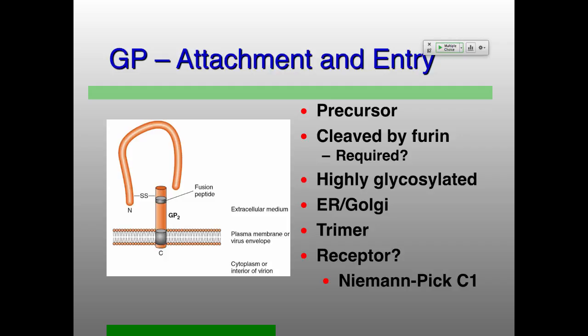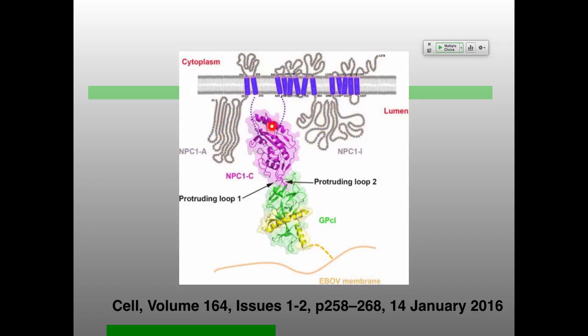We now know the structure of the Niemann-Pick C1 protein — this incredible transmembrane protein with 13 transmembrane helices. It's this part that interacts with the GP from Ebola virus. What this protein does in cells is not very well known and somewhat controversial. A few people have mutations in this gene — Niemann-Pick C1 — and those people are, not surprisingly, resistant to Ebola virus. Unfortunately, they also have all kinds of other problems, so it's not something you would necessarily recommend.